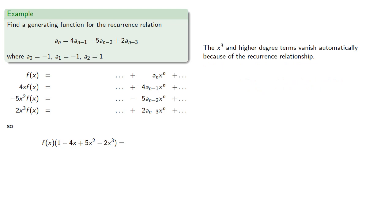Remember the x cubed and higher degree terms vanish automatically because of the recurrence relationship. So we only need to worry about the x squared or lower degree terms, and we'll include them as the first terms.